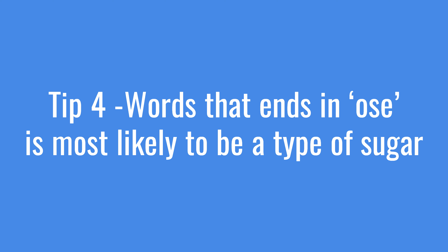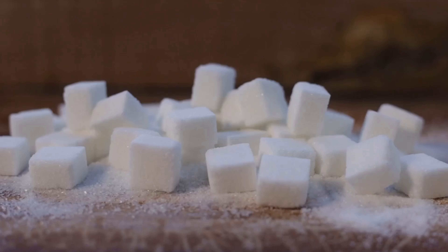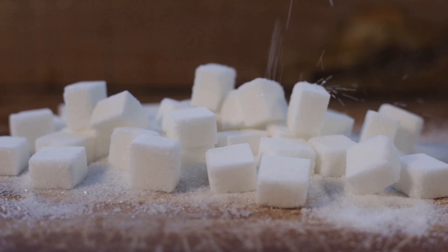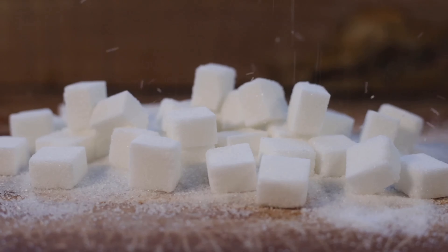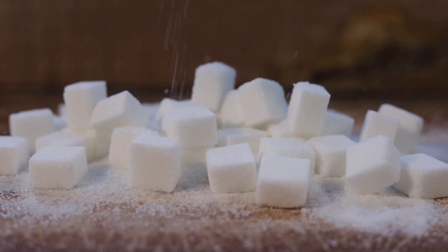Here's an easy rule of thumb: if it ends in "-ose", it's most likely a sugar. Think fructose, lactose, sucrose, maltose, and even lesser-known ones like allulose or tagatose.